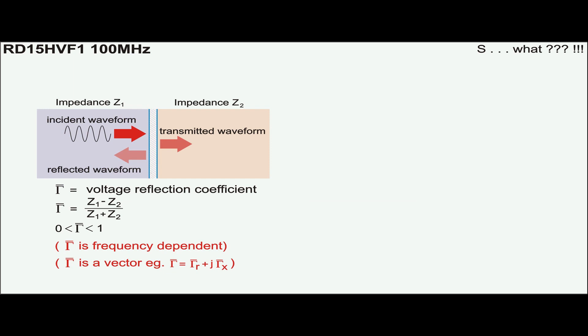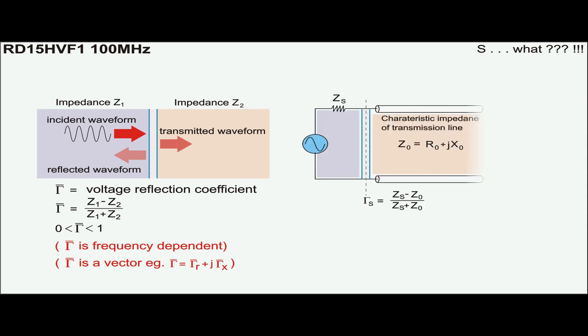This so-called gamma is the ratio of the difference and the sum of both impedances. Taking transmission line as an example, the boundary of the source and the load is separated by another boundary of transmission line which has characteristic impedance of Z0. Therefore, two gammas exist, one on the source side and the other on the load side.